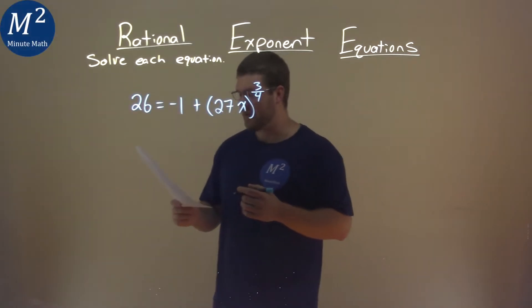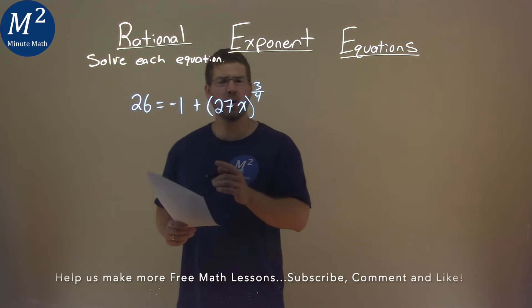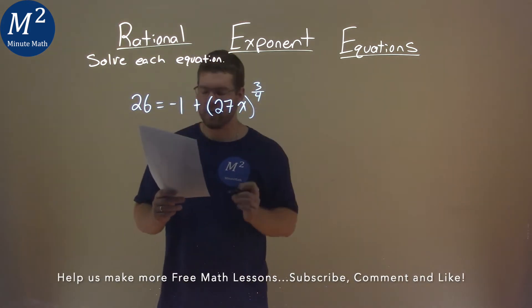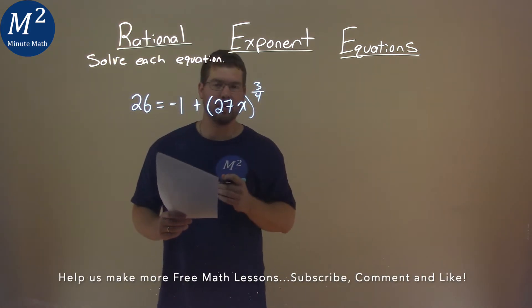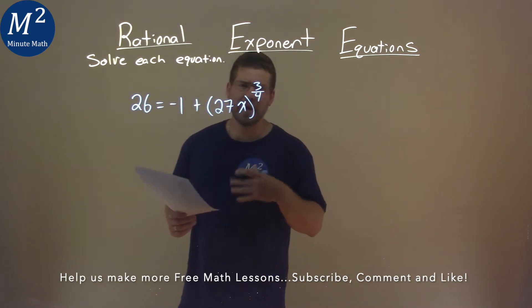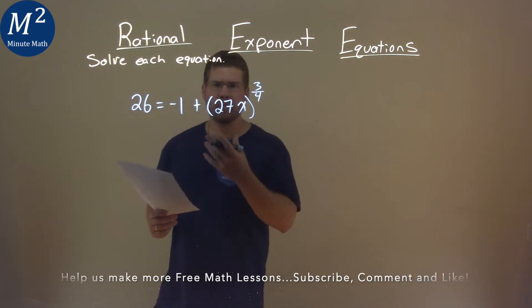We're given this problem right here. 26 equals negative 1 plus 27x to the 3 fourths power, and we've got to solve this equation. We're trying to get x by itself, and sometimes this can be a little tricky.